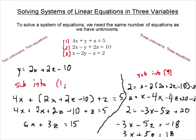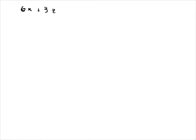So here's what we've done: we've taken this system of three variables and created a system with just x's and z's. Now we have a system of two equations and two unknowns, and we can solve it. Our two equations are: 6x + 3z = 15, and 3x + 5z = 18.